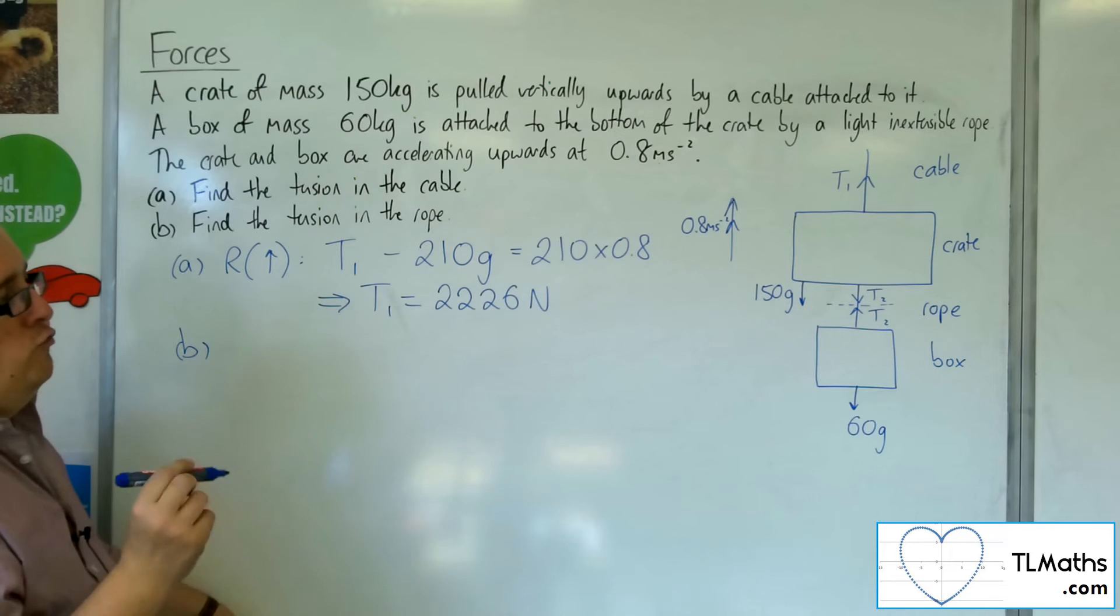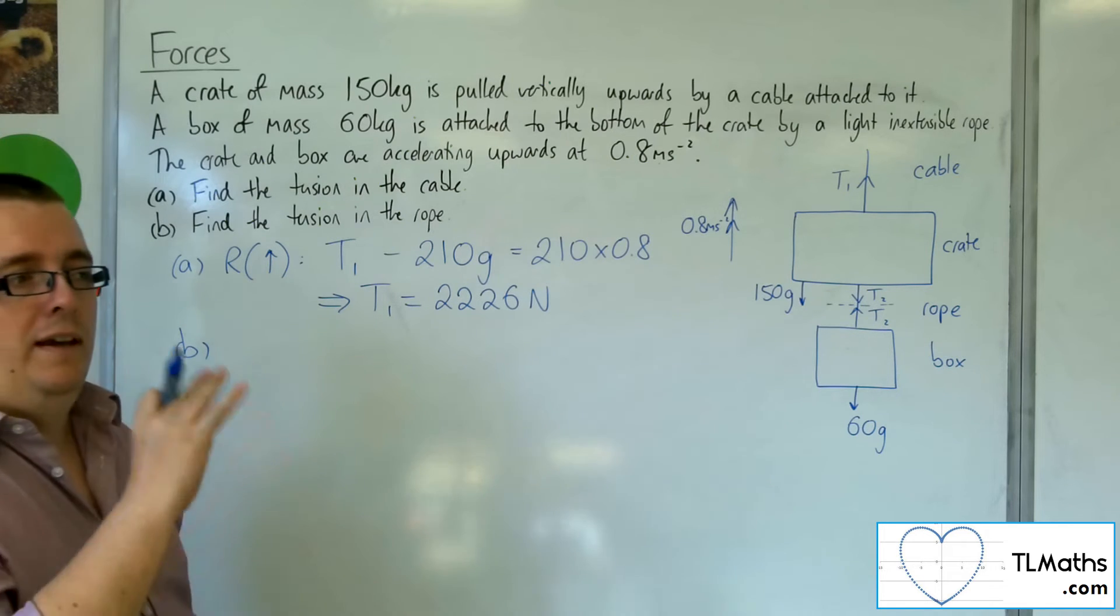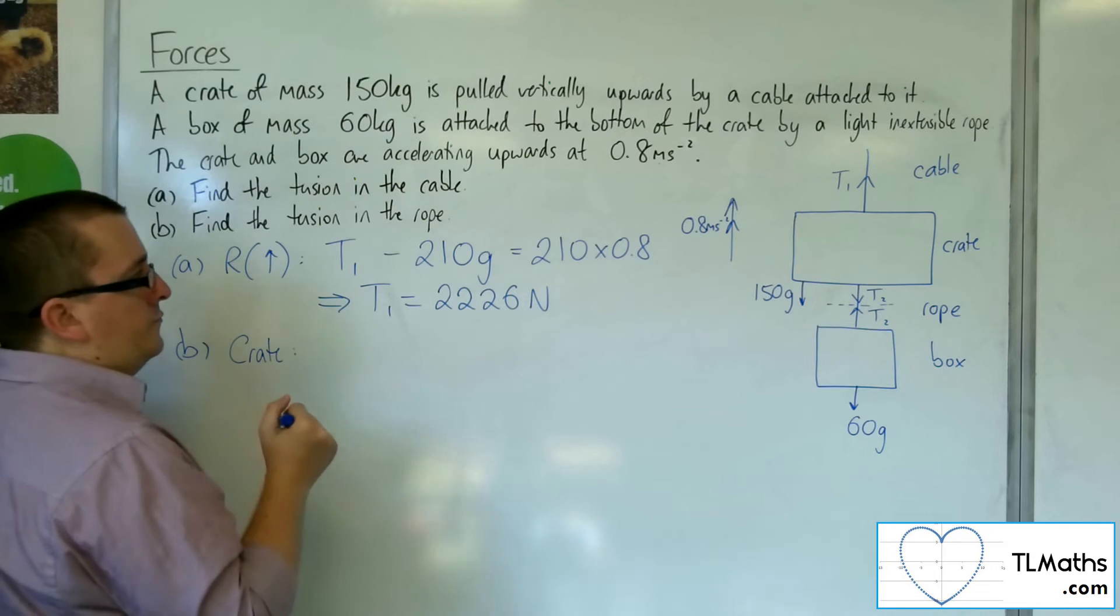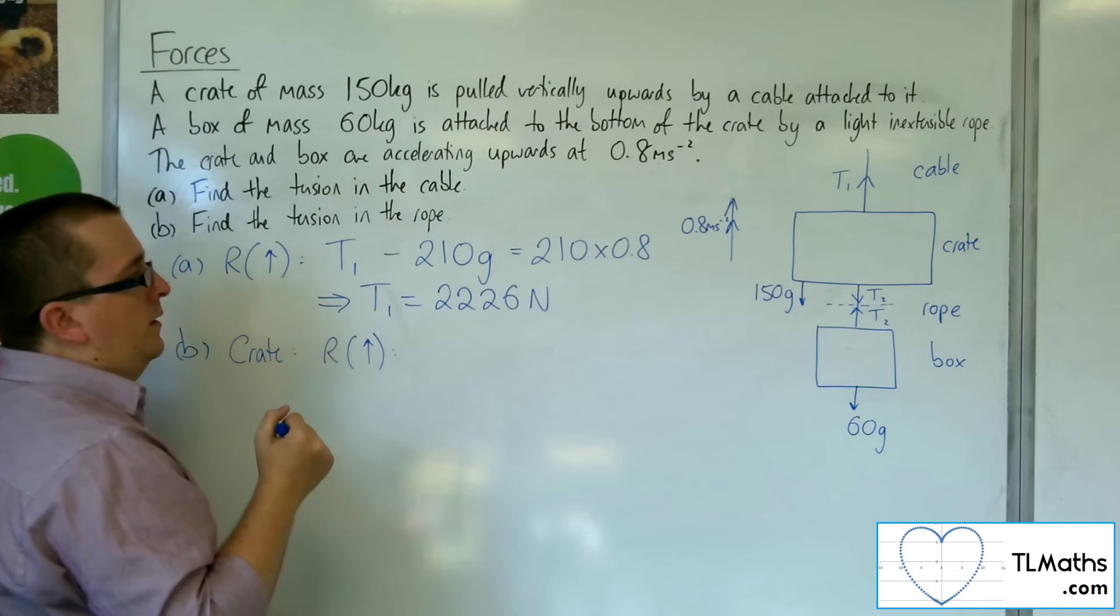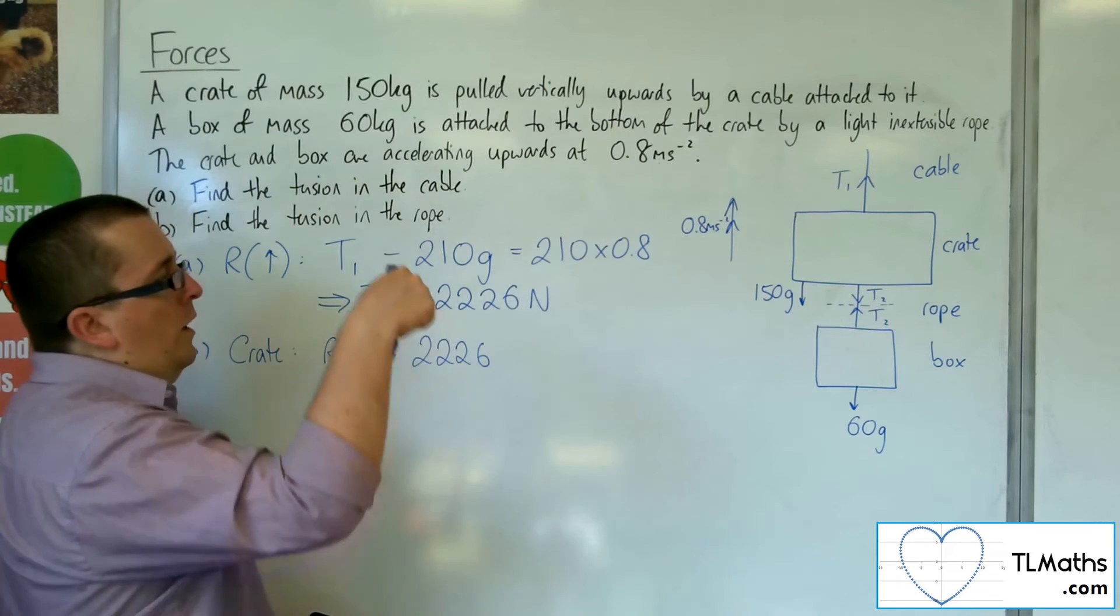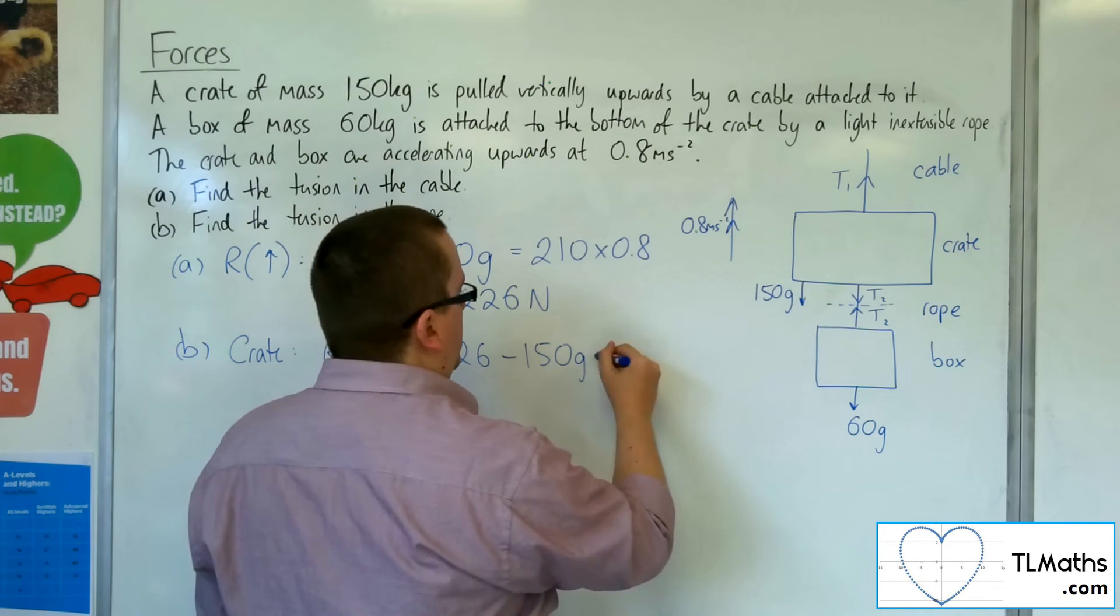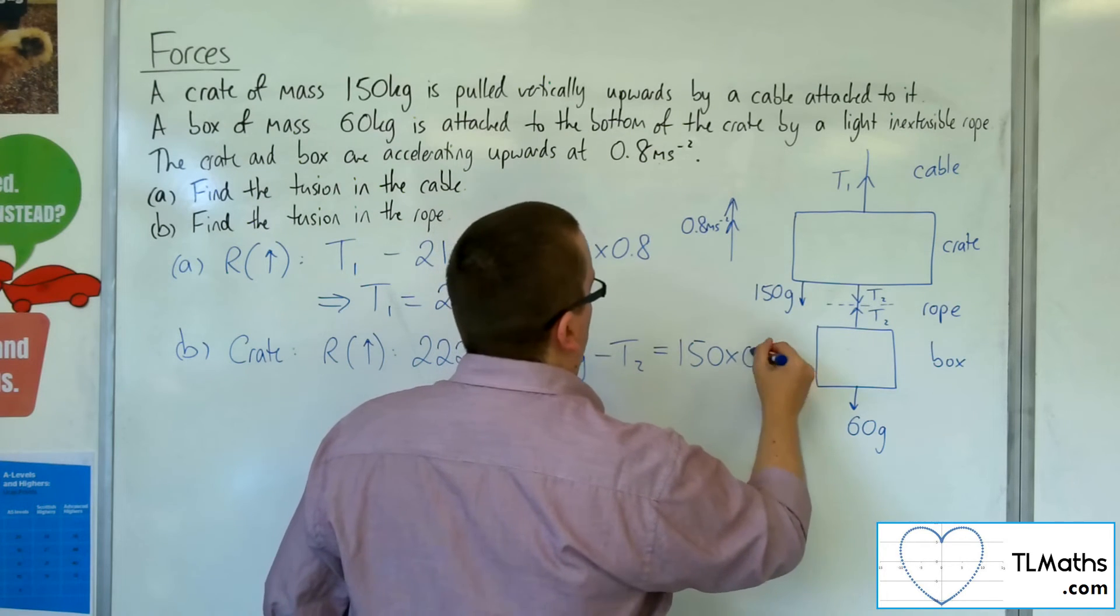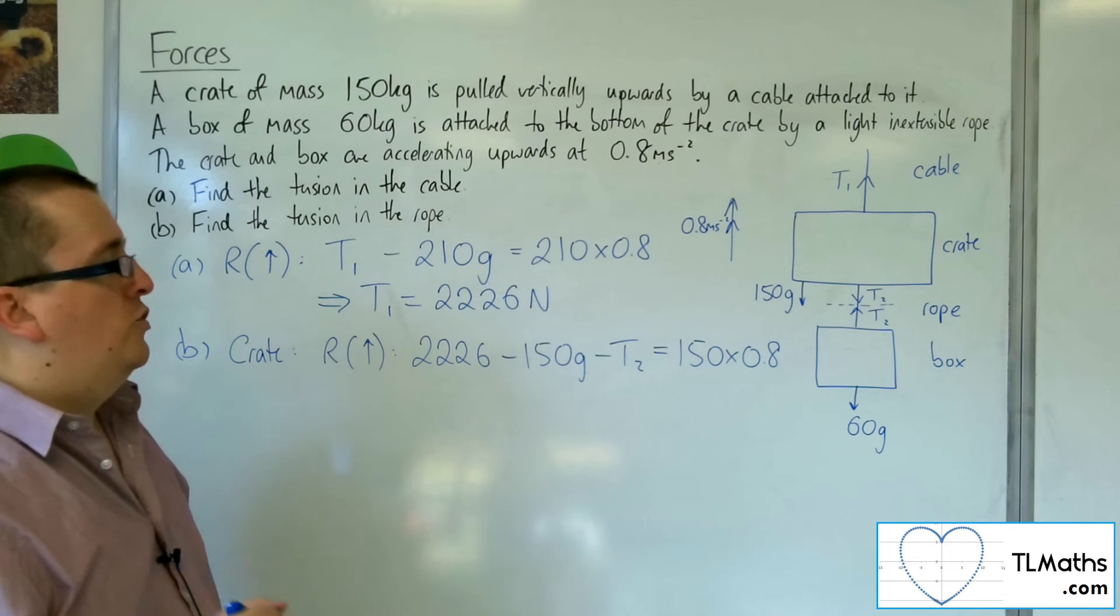Now I'll find the tension in the rope. So I've got to find T2. Now I'm just going to look at the crate and the box separately. If I look at the crate, then if I take upwards as positive, I've got T1, which is the 2226 newtons. I've got the 150G working against me, and I've got T2 working against me. And that's got to be equal to the mass times the acceleration.